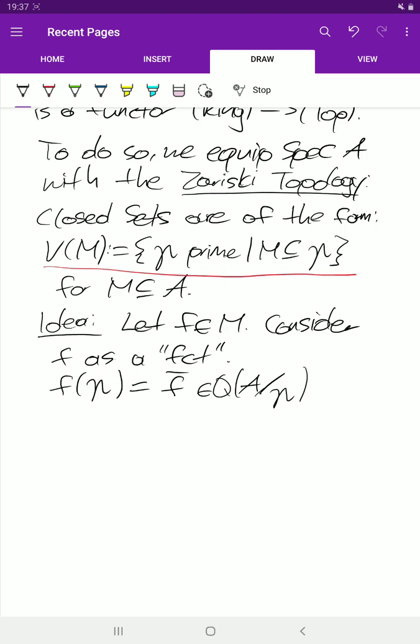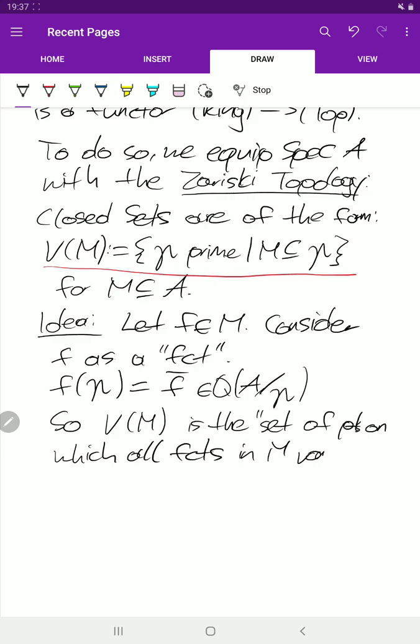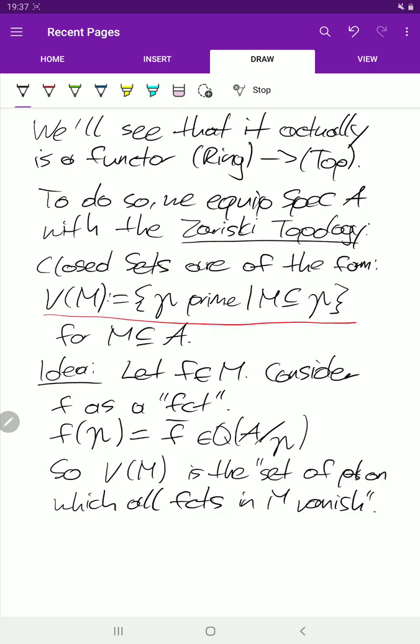So that's our function. But of course, note that if we vary P, we get different fields here. So it's not really a function how we want it to be, but that's the intuition. And so, this V of M is the set of points on which all functions in M vanish. We consider the elements of the ring A as functions and the prime ideals as points. And that's the intuition.